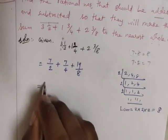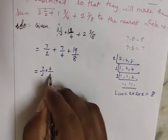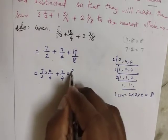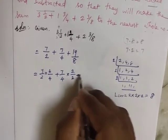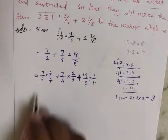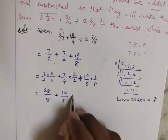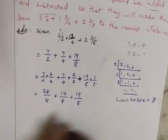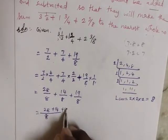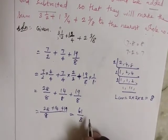7/2 multiply by 4 gives 28/8, plus 7/4 multiply by 2 gives 14/8, plus 19/8. Adding: 28 + 14 + 19 equals 61. So we get 61/8.